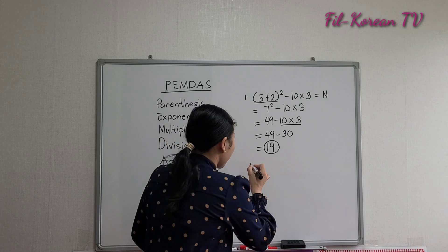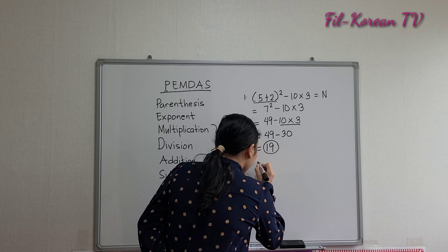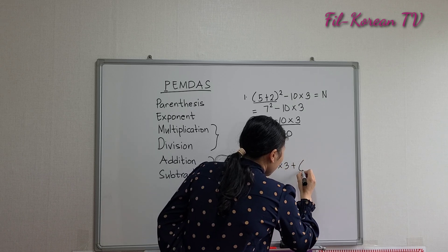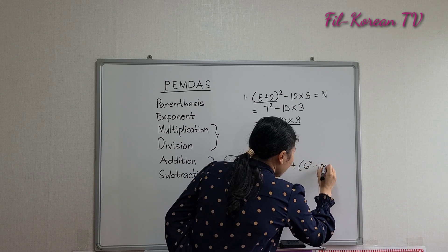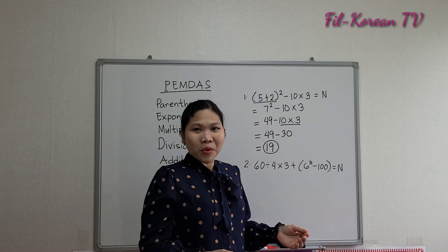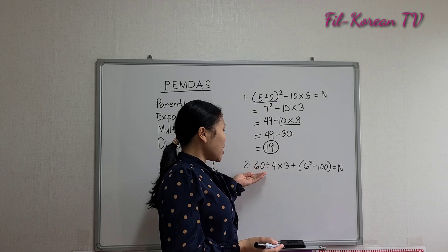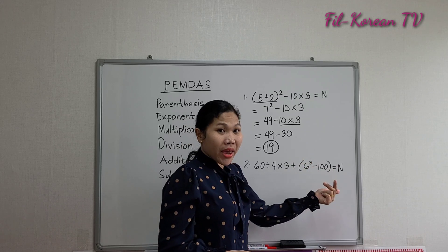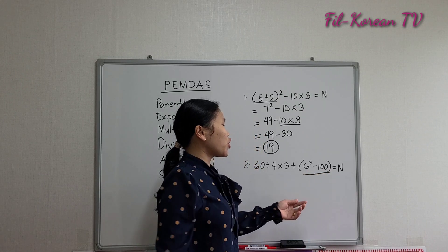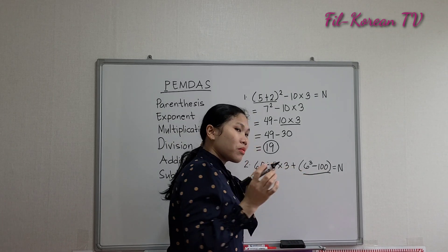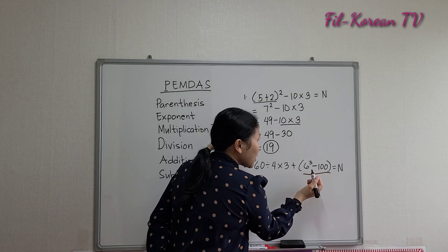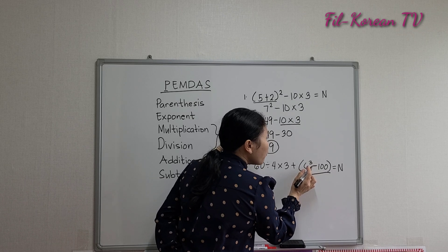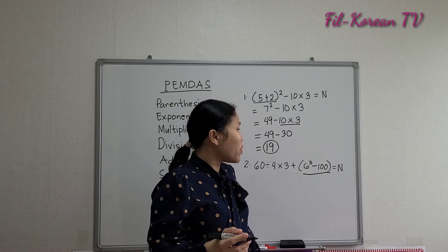Now let's proceed to the second example: 60 divided by 4 times 3 plus (6 to the third power minus 100) equals N. There is a parenthesis, so we must perform the operation inside it first. As you can see, inside the parenthesis there is an exponent — 6 to the third power minus 100. We will get the value of 6 to the third power before we subtract.